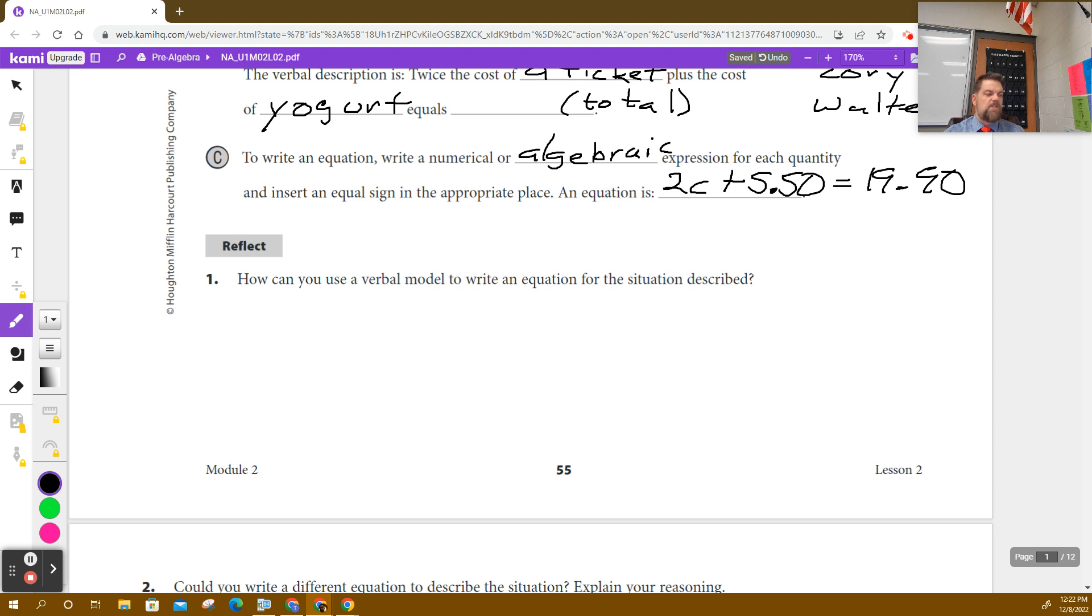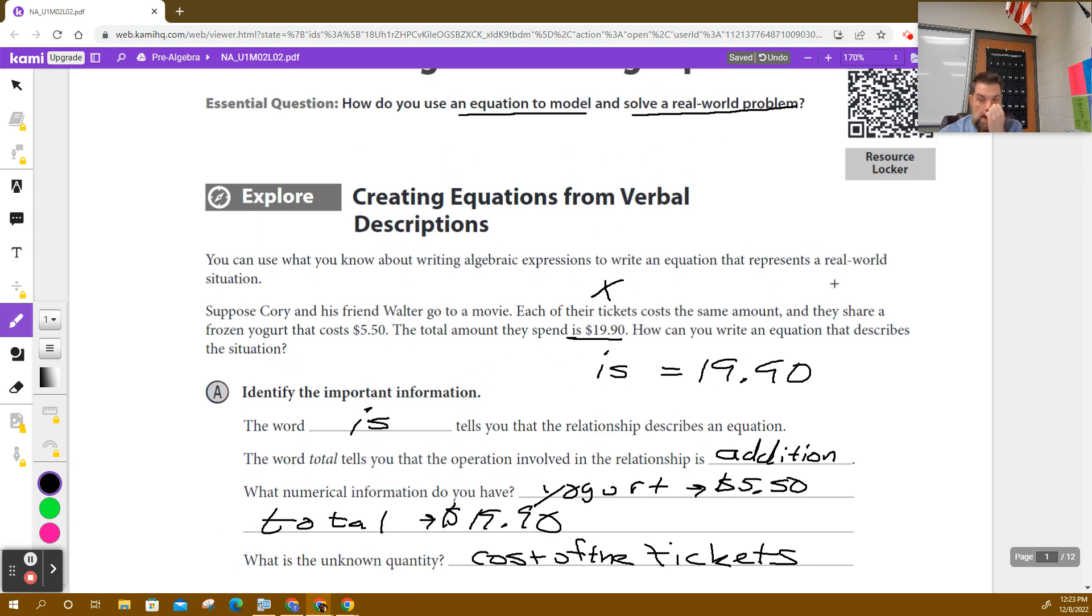So now the question is, now that we've got the equation, how can I use the verbal model to write the equation from described? Well, in other words, we said twice because there's two people. So this is two people have a ticket. This is the cost for their yogurt. One might say, well, did they spend, at first I thought, did they spend $5.50 each for their yogurt? And you've got to read it carefully. It says, and they share a frozen yogurt. So they bought one frozen yogurt that cost $5.50 and they shared it. So it's just $5.50.